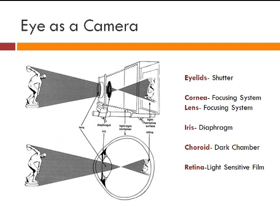If you consider the eye as a camera: the eyelids work as a shutter, cornea and lens act as a focusing system, iris acts as a diaphragm, choroid acts as a dark room chamber, and the retina is a light-sensitive film on which the image is formed.